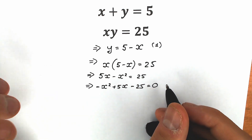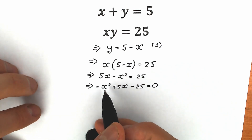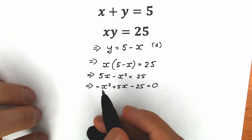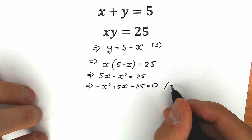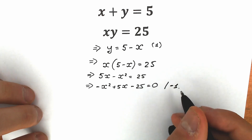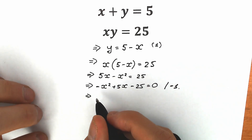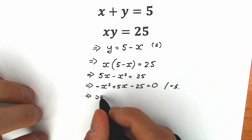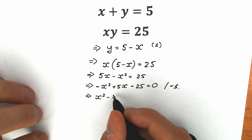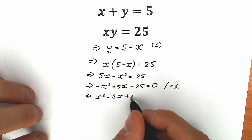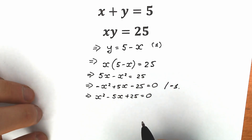Right now let's multiply by minus 1 because we prefer x squared, not minus x squared. As a result we will have x squared minus 5x plus 25 equal to zero.